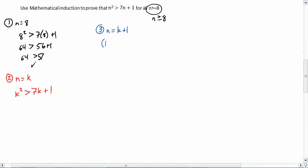We're going to go k plus 1 squared. And we need to show that that is greater than 7 times k plus 1 plus 1.